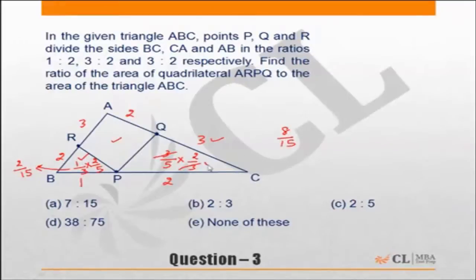So the remaining area of this triangle will be 1 minus 8 by 15, so it will be 7 by 15. So 7 by 15 of the entire triangle. Hence my answer option will be A.